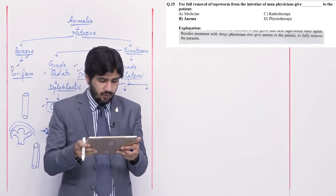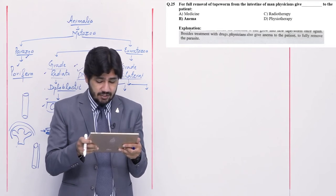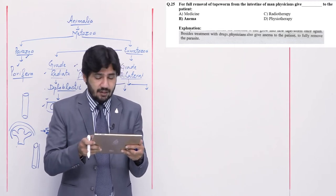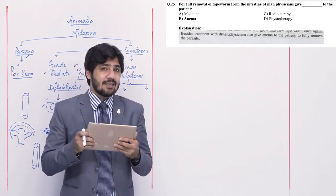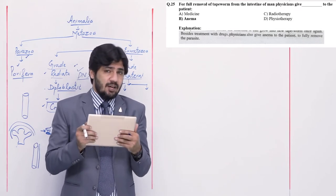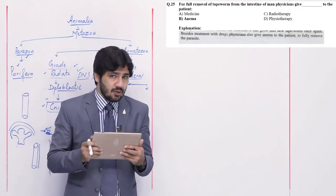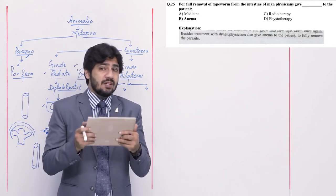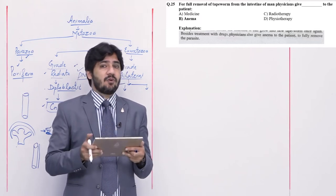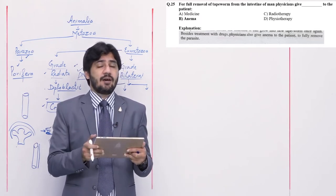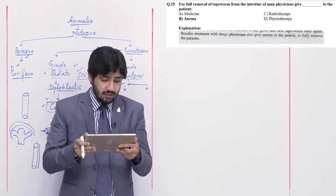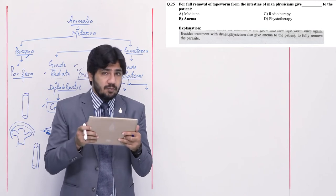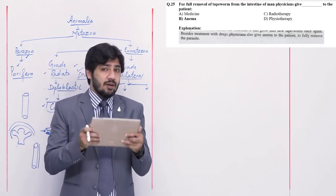Question number 25: for full removal of tapeworms from the intestine of man, physicians give blank to the patient — alpha medicines, beta enema, charlie radiotherapy, or delta physiotherapy. Infestation is when a tapeworm segment enters the body, reproduces, and complete tapeworms multiply. Removing them with medicines is called disinfestation. But for full removal, an enema is used. Since the question asks about full removal, right option is beta — enema. Normal removal is by medicines.